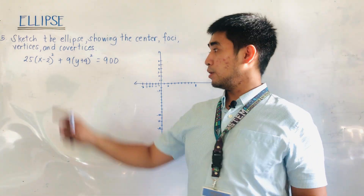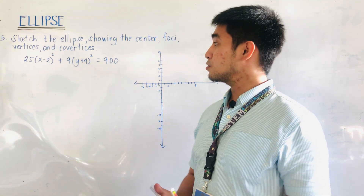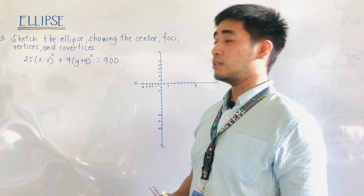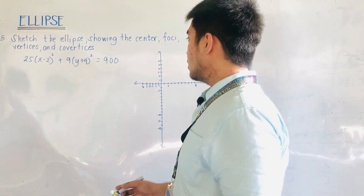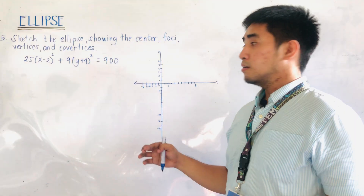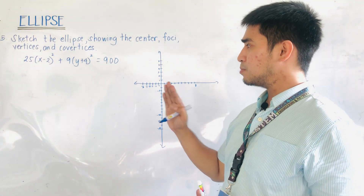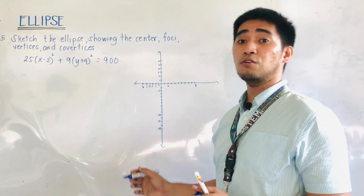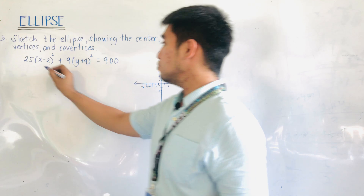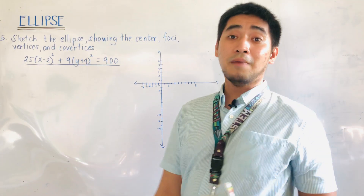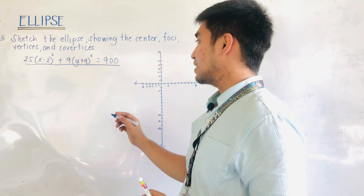For example, we are given the equation: 25 times the quantity (x minus 2) squared plus 9 times the quantity (y plus 4) squared is equal to 900. If we study the equation of an ellipse, the right side is always equal to 1. Therefore, we need to transform this equation by dividing both sides by the constant on the right side, which is 900.